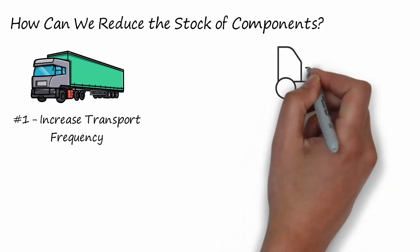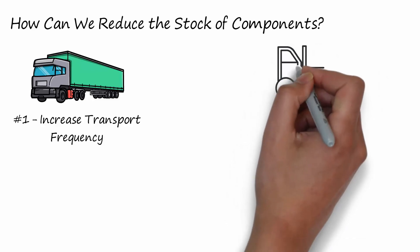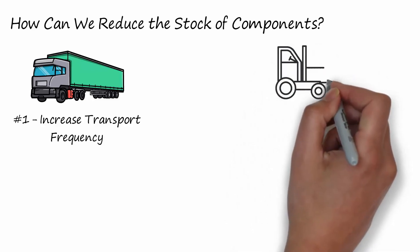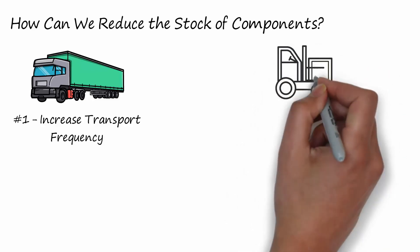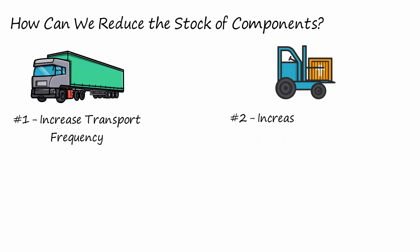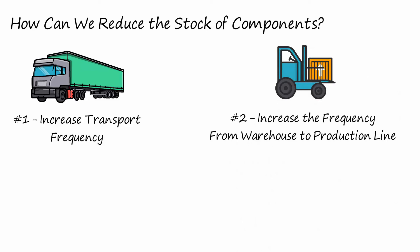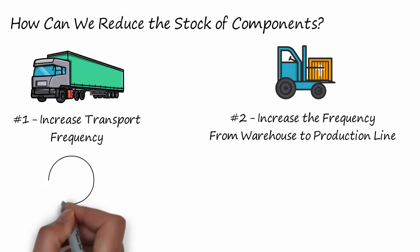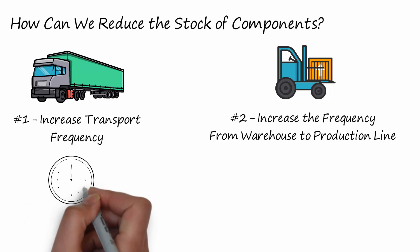Tip 2: We can increase the frequency of deliveries from our warehouse to our production line, so less stock in our production line will be needed. We can also reduce the packaging size so we can have less stock.